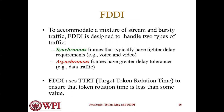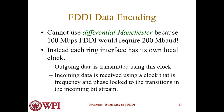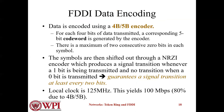FDDI uses TTRT, Target Token Rotation Time, to ensure that the token rotation time is less than some defined value. Each FDDI interface has its own local clock; outgoing data is transmitted using this clock, and incoming data is received using a clock that is frequency and phase locked to the transitions in the incoming bit stream. Data is encoded using a 4B/5B encoder, and the symbols are shifted out through an NRZI encoder which produces a single transition whenever a one bit is being transmitted and no transition when a zero bit is transmitted.